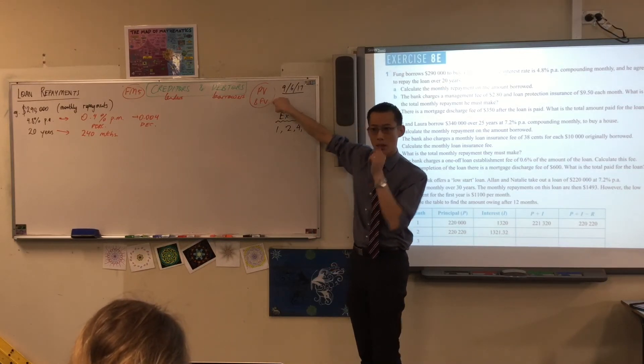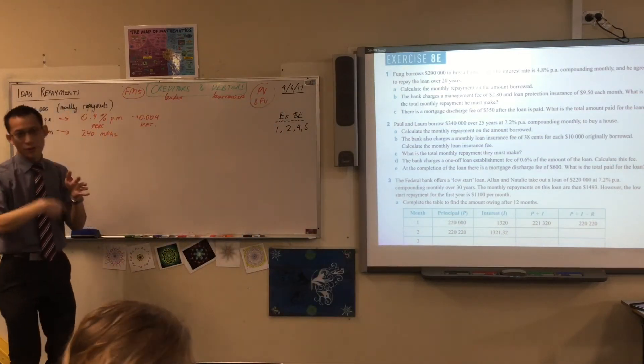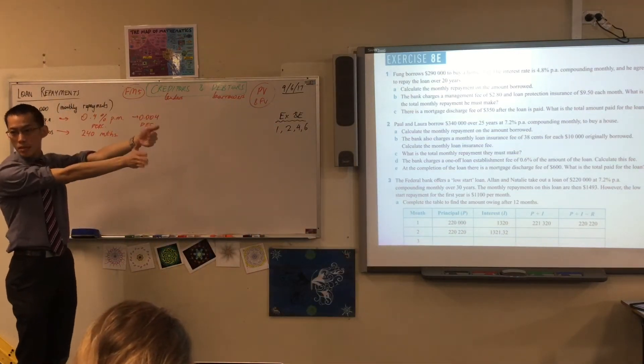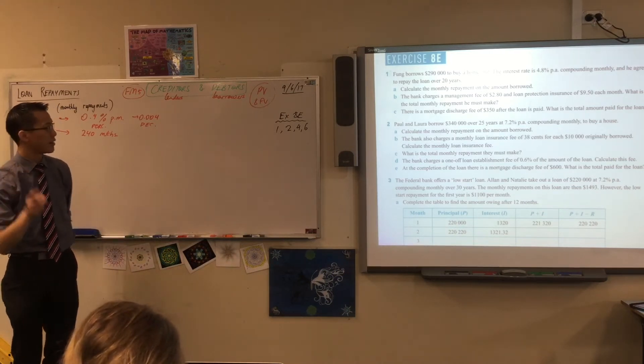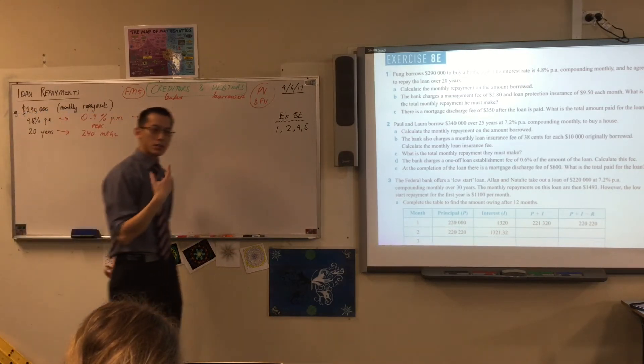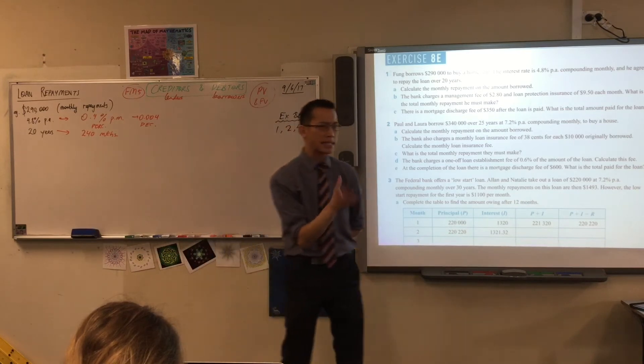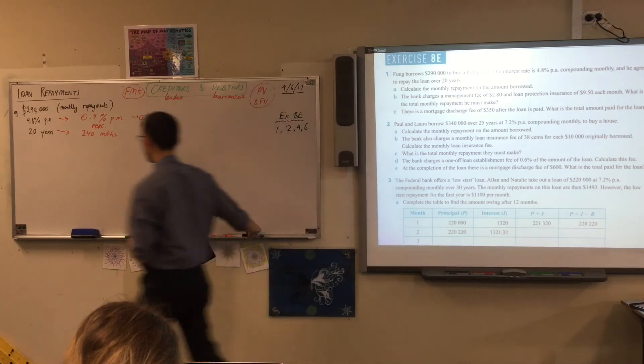Future value makes sense because remember, future values are taking some annuity, right, and then doing it over and over and over again, and then you end up at some certain point. So just keep that in mind for a second. Future value. $290,000 is what you have to pay off, right? So on the face of it, it would make sense to say, what is the amount he's going to have to pay every month? I actually should write this: monthly repayment.